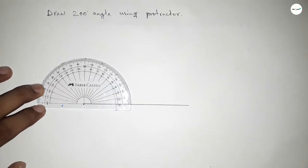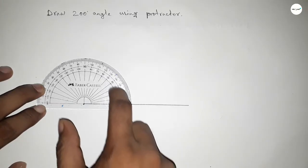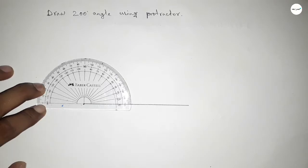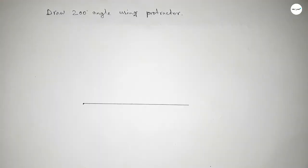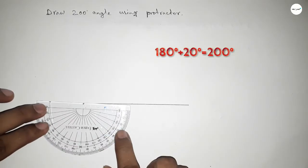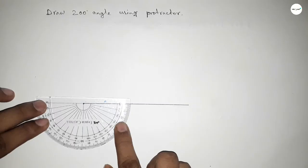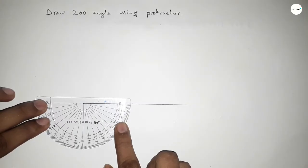This is up to 180 degree angle, but we have to draw a 200 degree angle. So by adding 20 degree angle with 180, then we can get 200 degree angle. So putting the protractor by this way.